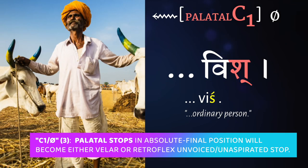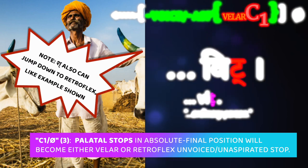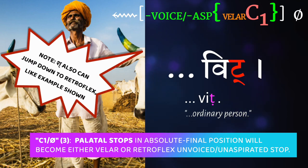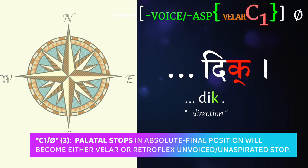The palatal śa-kara also behaves this way. When it comes at the end of a sentence, that word-final śa — the palatal sibilant — jumps up to the velar class, the ka-varga, and turns into a ka-kara. This means the word diś becomes dik, meaning direction, when it is at the end of a sentence.